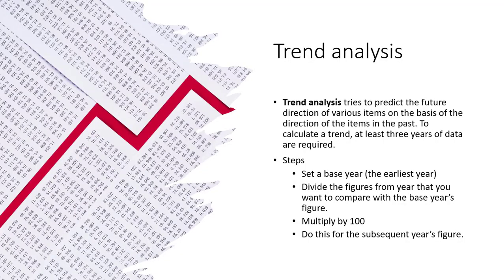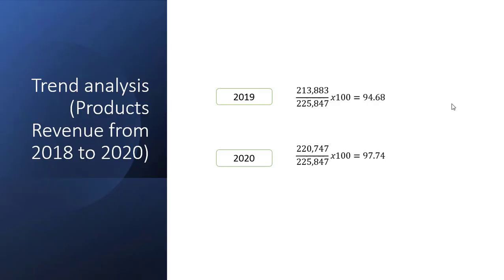Trend analysis, on the other hand, is comparing information for at least three years. What you will do is determine the base year, use that as your denominator, then divide by the current year or the one that you want to compare, then multiply by 100%. In trend analysis you're trying to figure out whether there are increases or decreases across several years, giving an overview for the reader of the financial report on whether there are downward or upward trends.